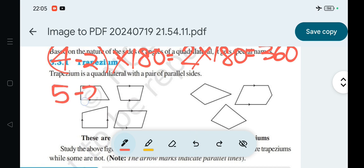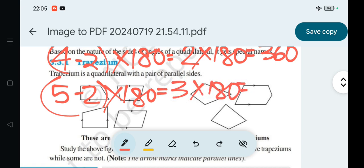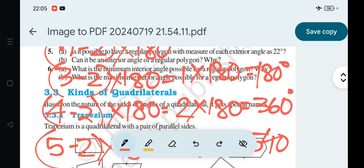For 5 sides, (5-2) × 180 equals 3 × 180 equals 540 degrees. As the number of sides increases, the interior angle sum increases.